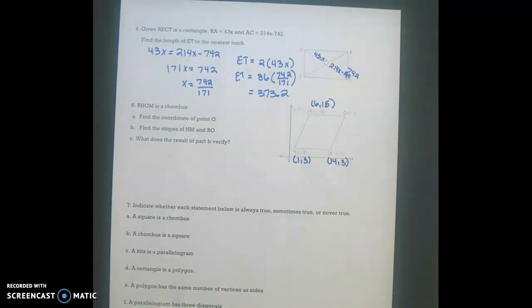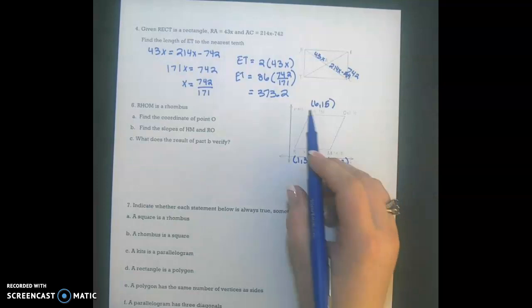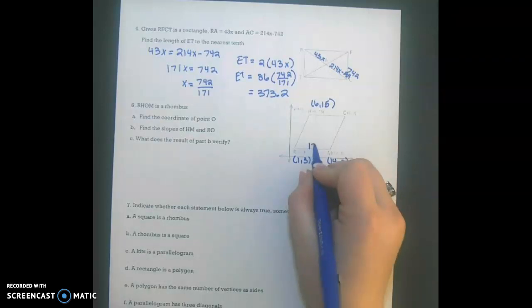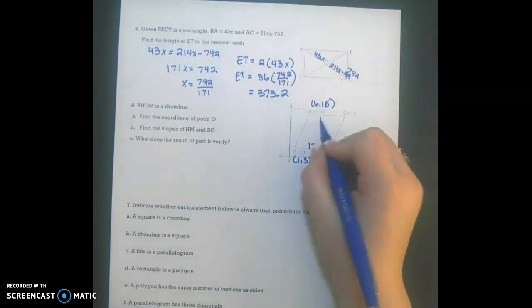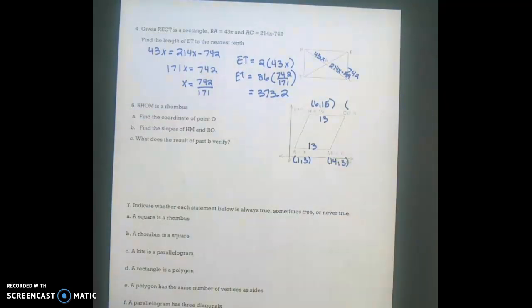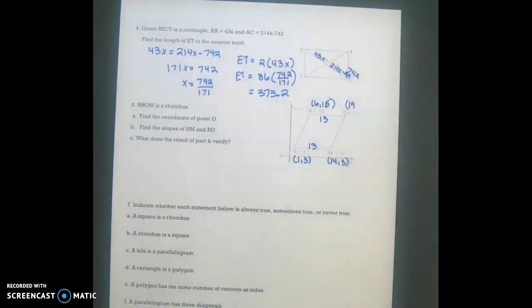So remember, a rhombus has all congruent sides. So, we need to find our horizontal value here so we can find the same on the top. So our x values have a difference of 13, so this must be a length of 13, which means this is also a length of 13. So my x value for O is going to be 6 plus 13, which is 19.